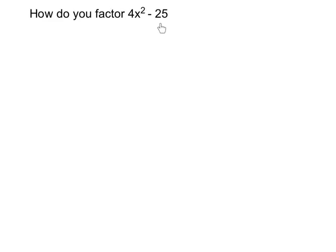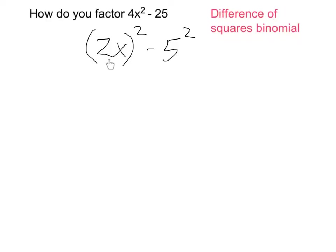4x squared minus 25 is a great example of a difference of squares binomial. That is because each of the terms is a perfect square. It can be rewritten as 2x quantity squared and 5 squared.